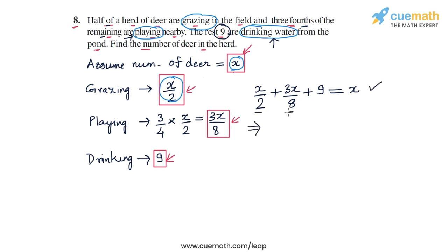So x by 2 plus 3x by 8. Let's first combine these terms. I can write x by 2 as 4x by 8, and then I have 3x by 8, and then 9 equals x. So 4x by 8 plus 3x by 8 equals 7x by 8. So I get 7x by 8 plus 9 equals x.